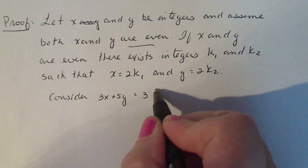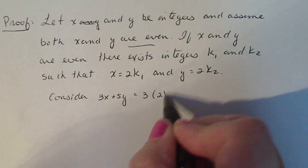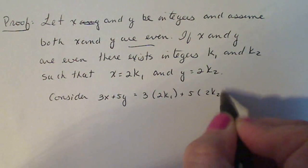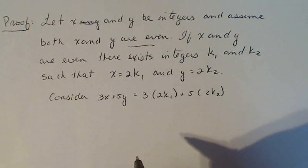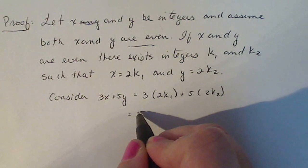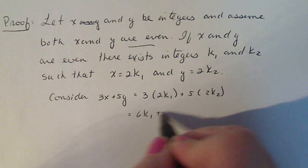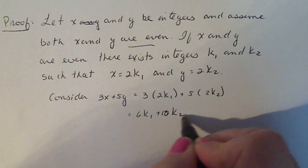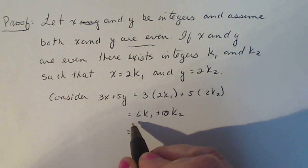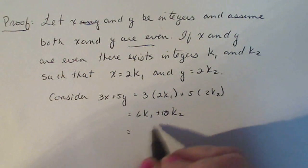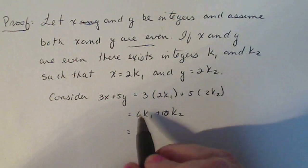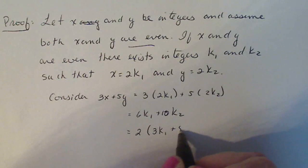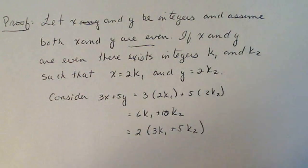So if I do my substitution 3 times 2k1 plus 5 times 2k2. And I'm going to simplify that a little bit and I get 6k1 plus 10k2. And what I'm going to do here, I notice that I can factor, I could notice that here, I can factor out a two out of both, but I can write this as 2 times 3k1 plus 5k2, which is very convenient.